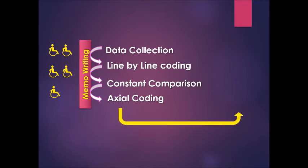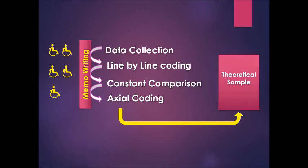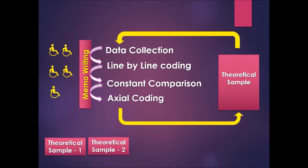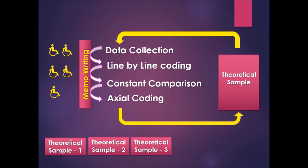This will lead you to select a theoretical sample for further data collection, and this process will continue until you reach theoretical saturation. You may have one theoretical sample, then the process repeats and you get another theoretical sample, then perhaps another, and then a fourth theoretical sample. After that, you feel the findings are getting theoretically saturated, and at that point you will stop theoretical sampling.